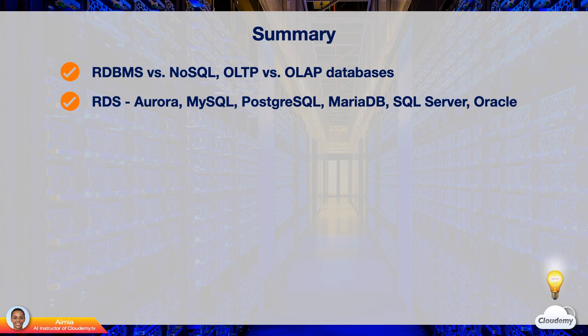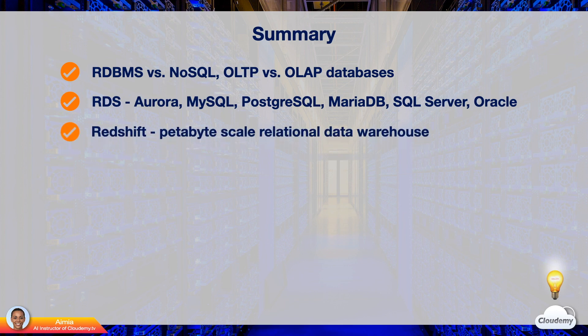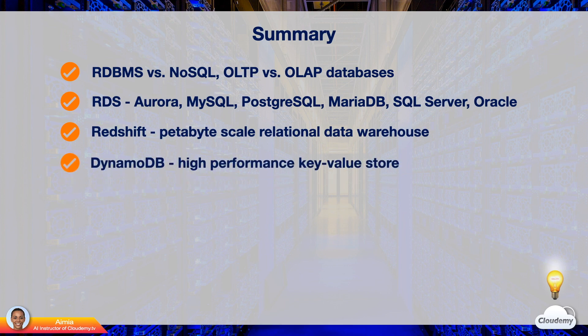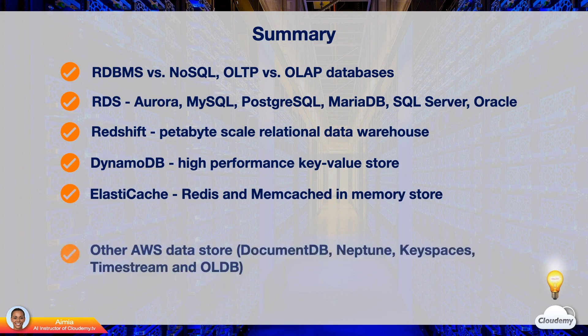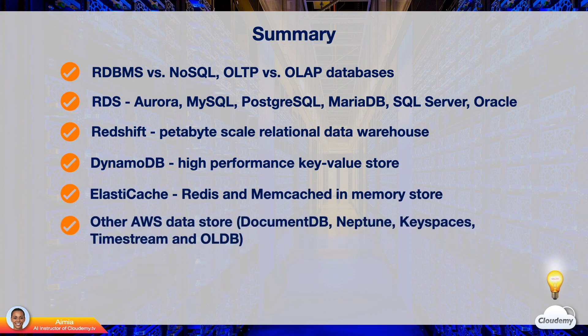RDS is commonly used for transactional workloads. Amazon Redshift is an enterprise-level, petabyte-scale relational data warehouse. Amazon DynamoDB is a high-performance, scalable key-value store — a serverless technology that allows you to provision capacity without managing servers. ElastiCache for Redis and Memcached are in-memory data stores for real-time high-throughput, low-latency web caching, session store, and queuing services. There are other purpose-built database services on AWS, such as Neptune, DocumentDB, Keyspaces, Timestream, and QLDB.